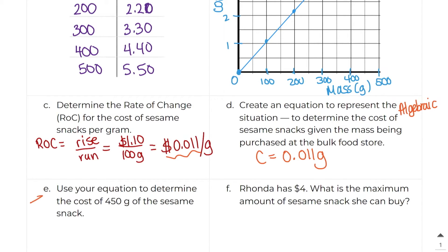Okay, in part E, it says use your equation to determine the cost of 450 grams of the sesame snack. So here we know that this right here represents the G. So it asks us to use our equation. So we start by writing down our equation. And now we know that the G right here is 450. So every time I see a G, I'm going to replace it with 450. So I'm going to say C equals 0.011, and instead of G, I'm going to put 450.